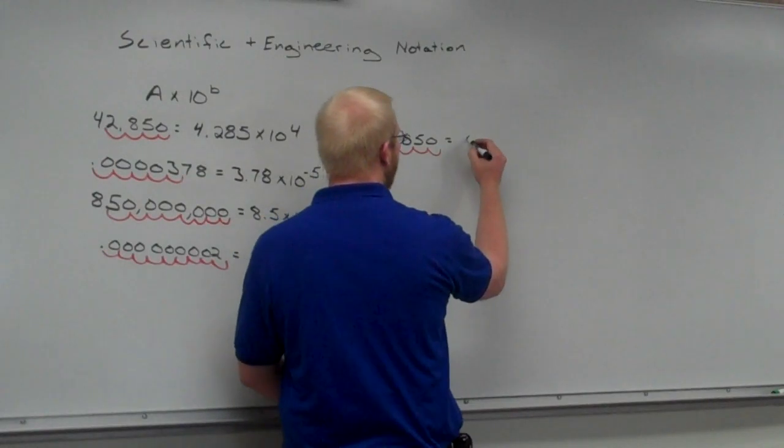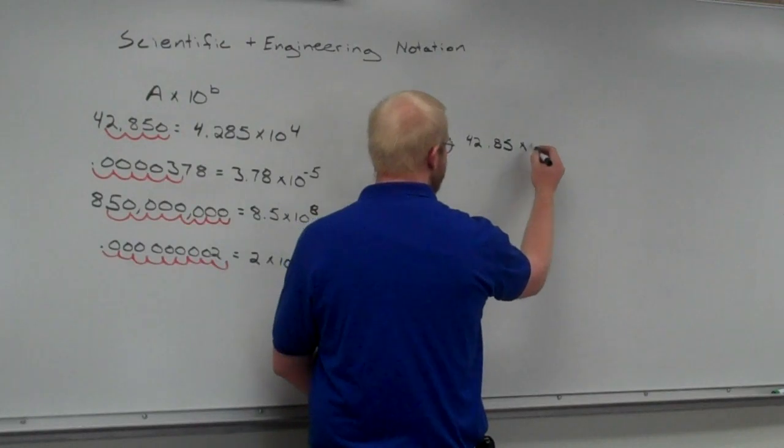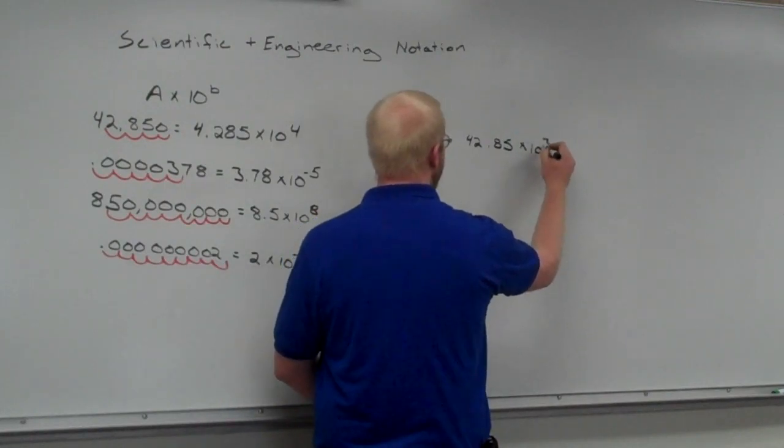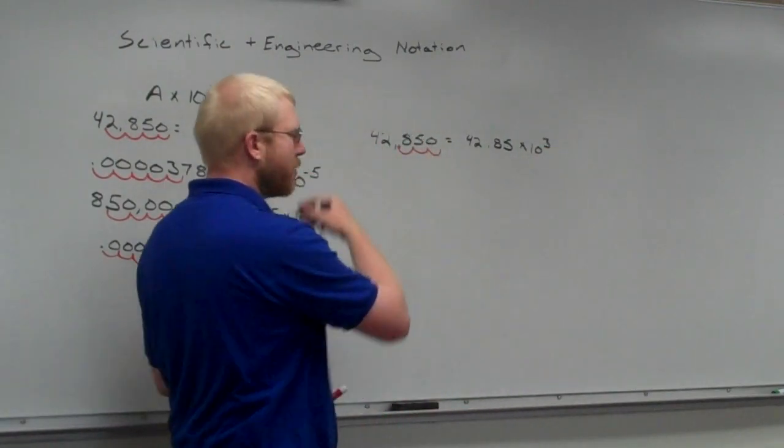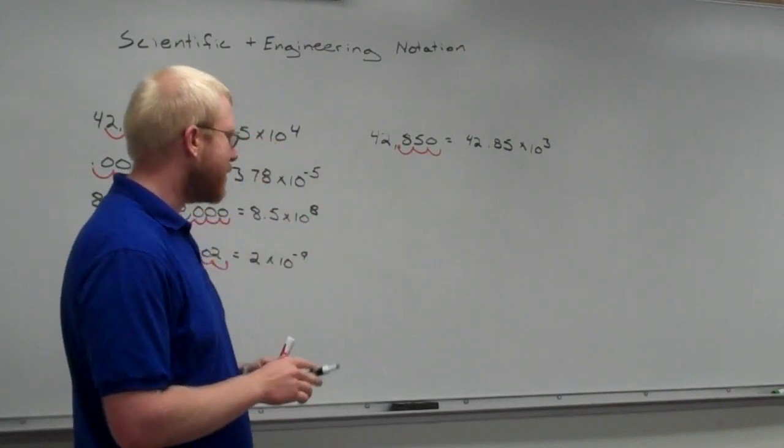So, this is going to be 42.85 times 10 to the 3rd. Because I move them, it's a number greater than 0, it's not a decimal. I move them that way, that's 10 to the 3rd.